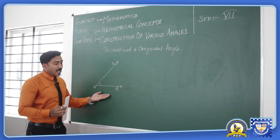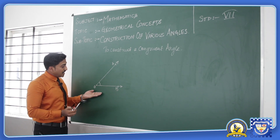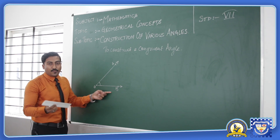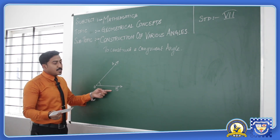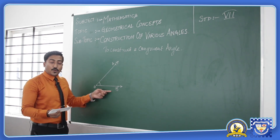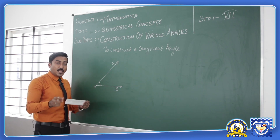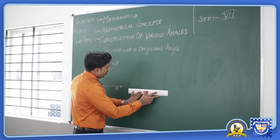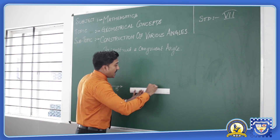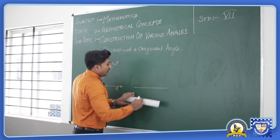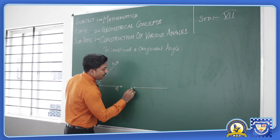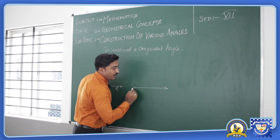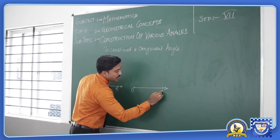As you can see there is an angle given over here which is named as AOB. We need to construct another angle with the help of basic measurements as same as the angle given over here. For that we will start by drawing a basic line. Let us put the ruler over here and draw a straight line. Name the line segment at the beginning as O, mark it as an angle O ray over here and name it as C.